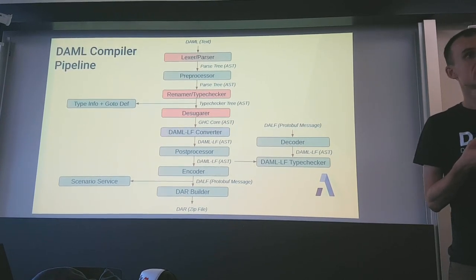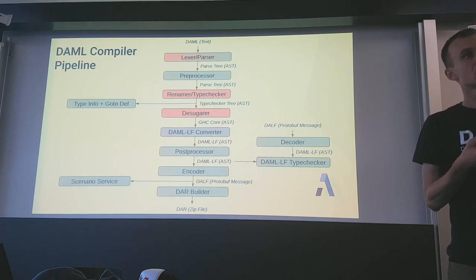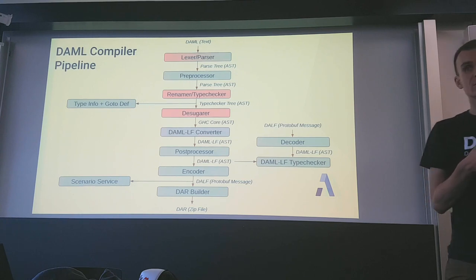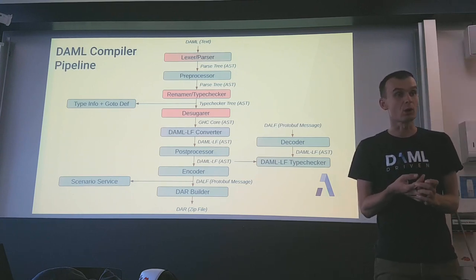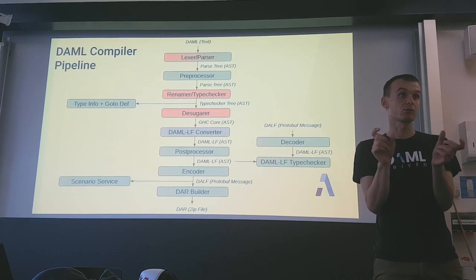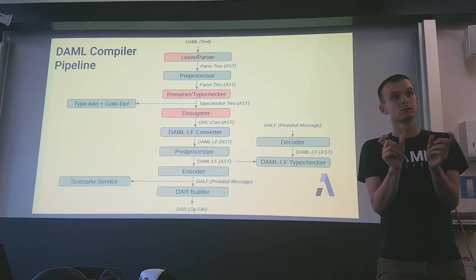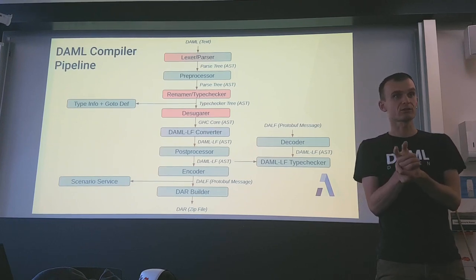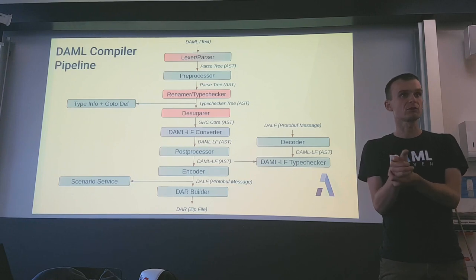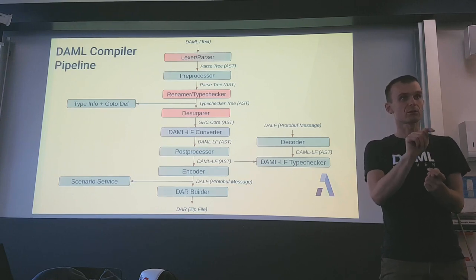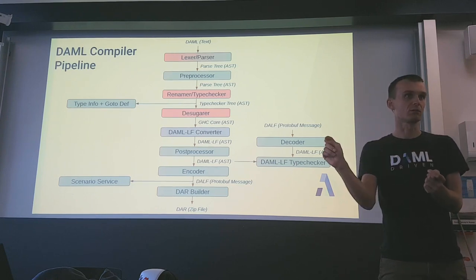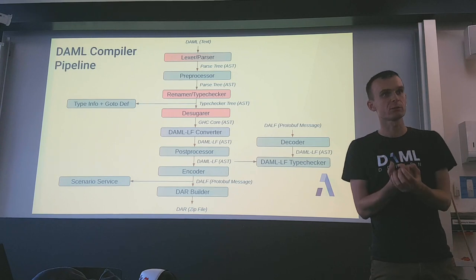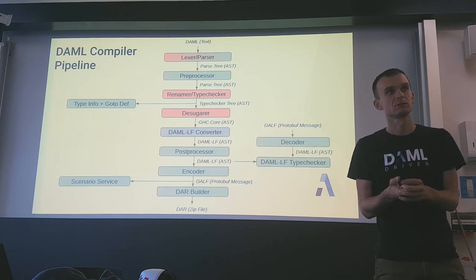The parser also preserves spacing: we only do the dot-rewriting if there are no spaces around the dot. If you want function composition, you write 'f . g' with spaces. The other nice thing is we can reuse field names across templates — here it just works, whereas in Haskell the user experience is terrible.